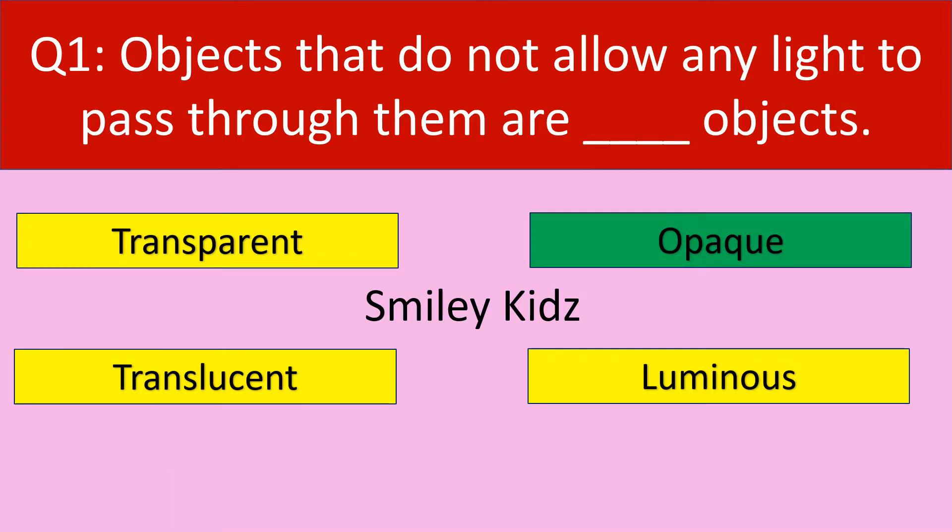The correct answer is Opaque. Objects that do not allow any light to pass through them are called Opaque objects.